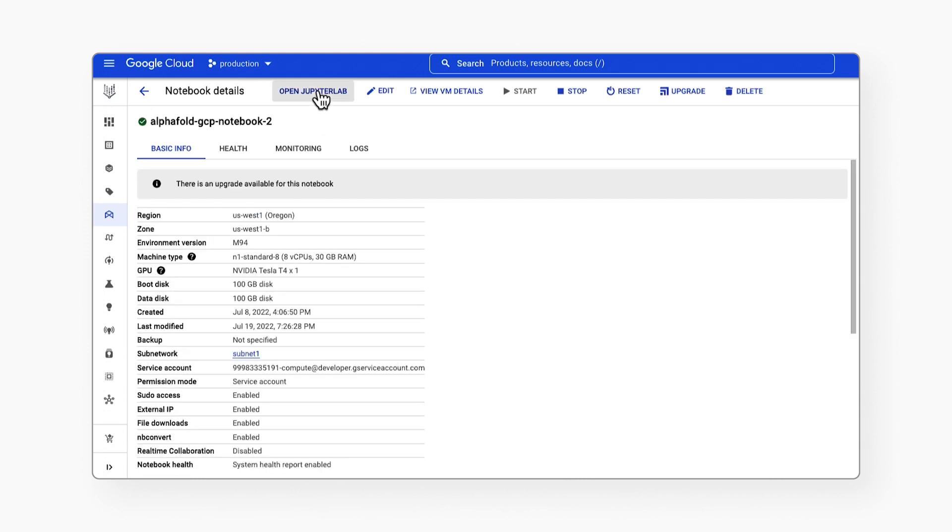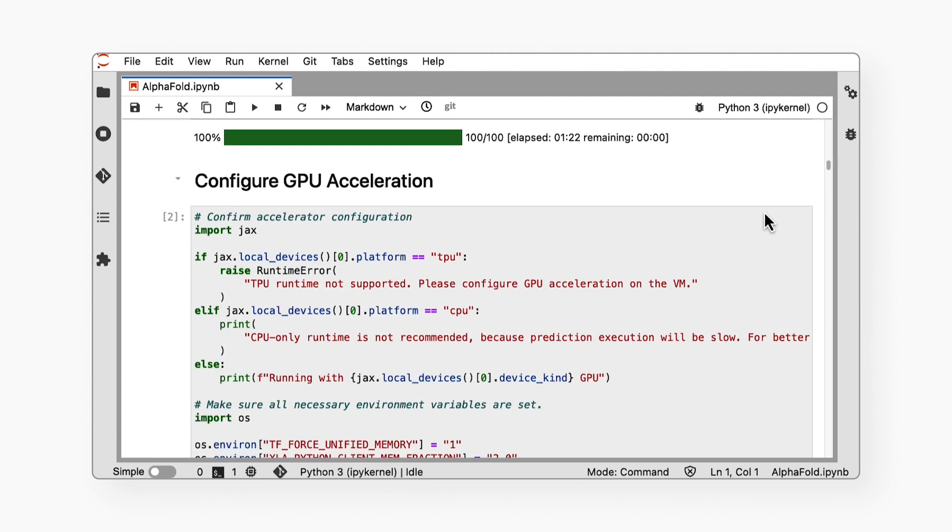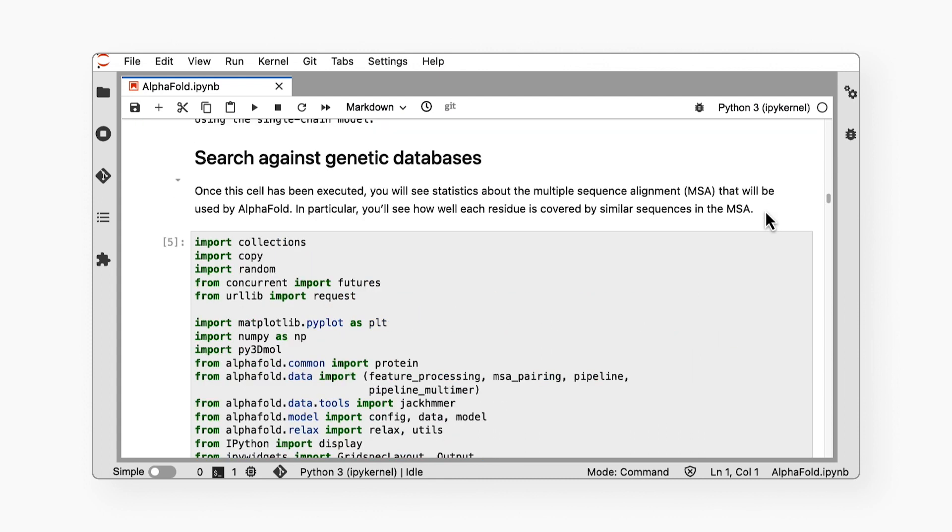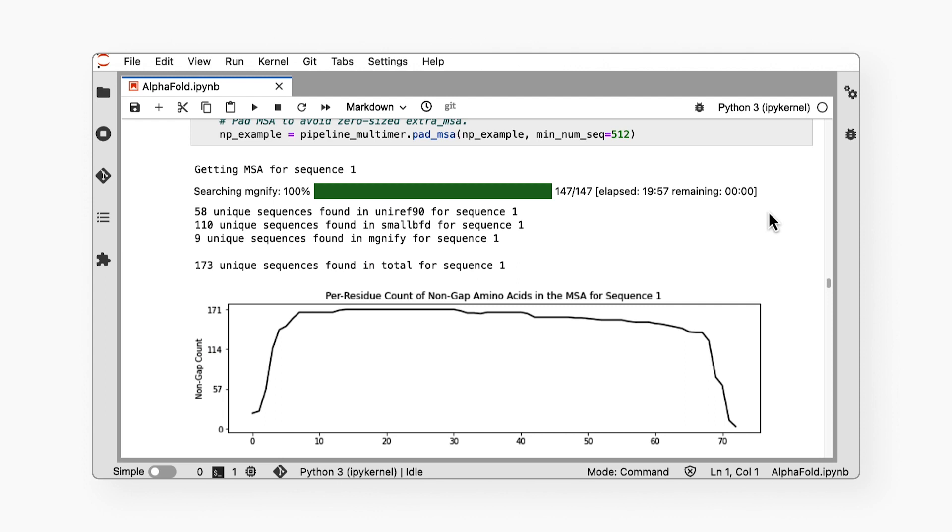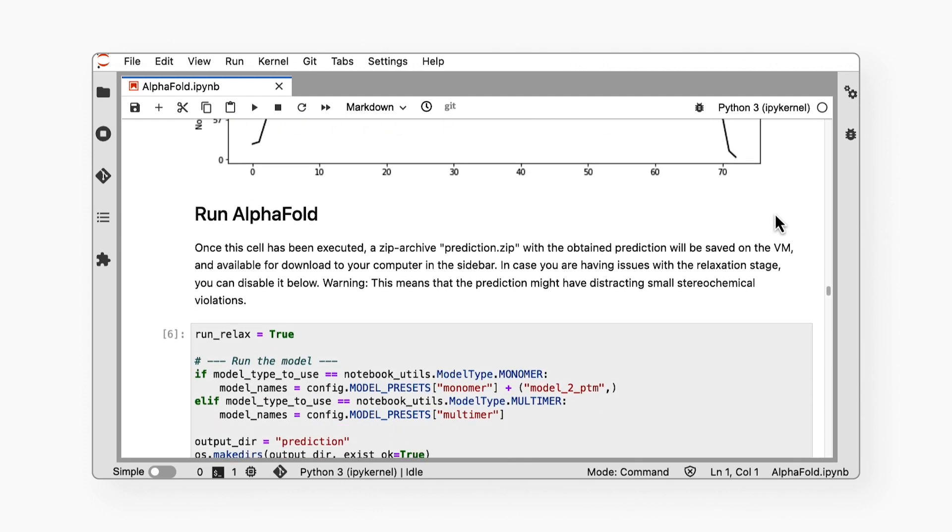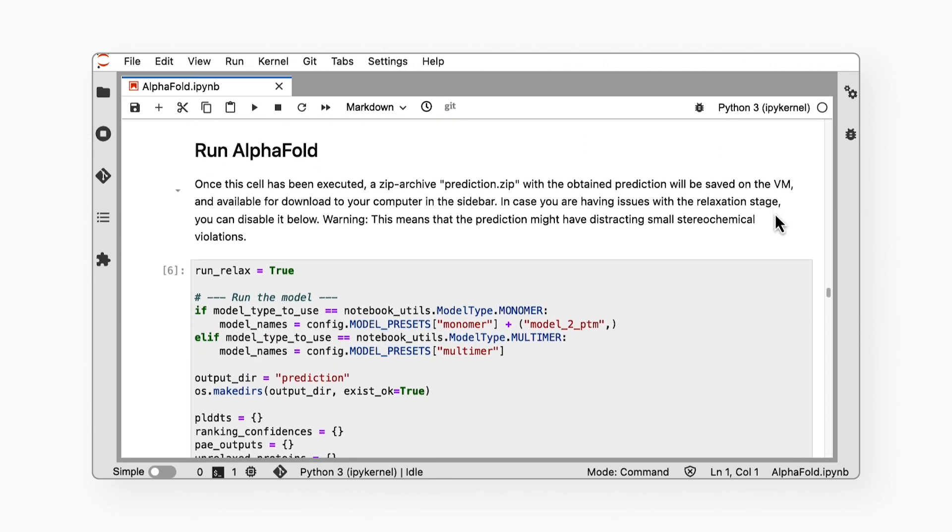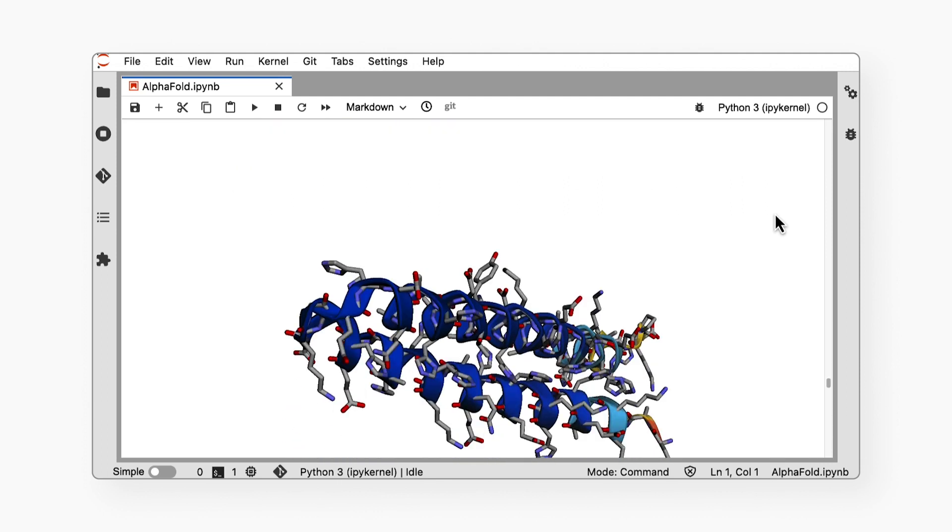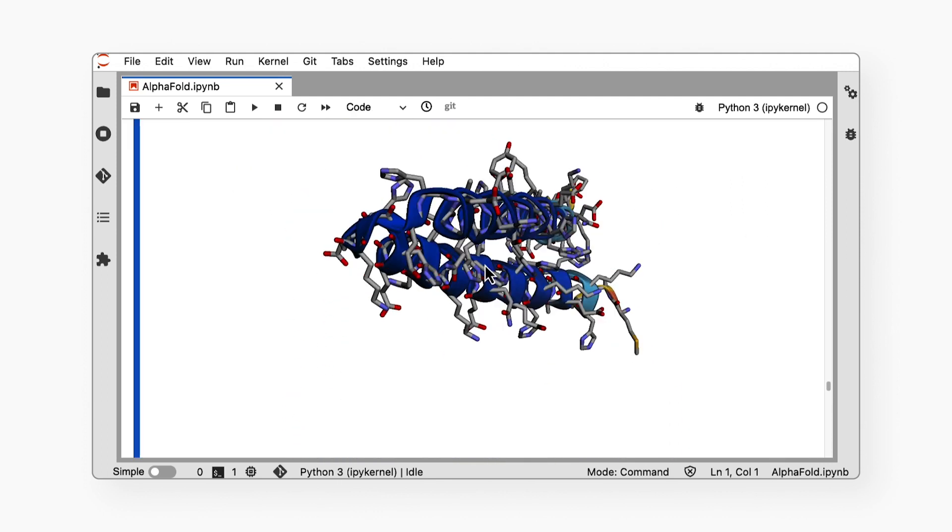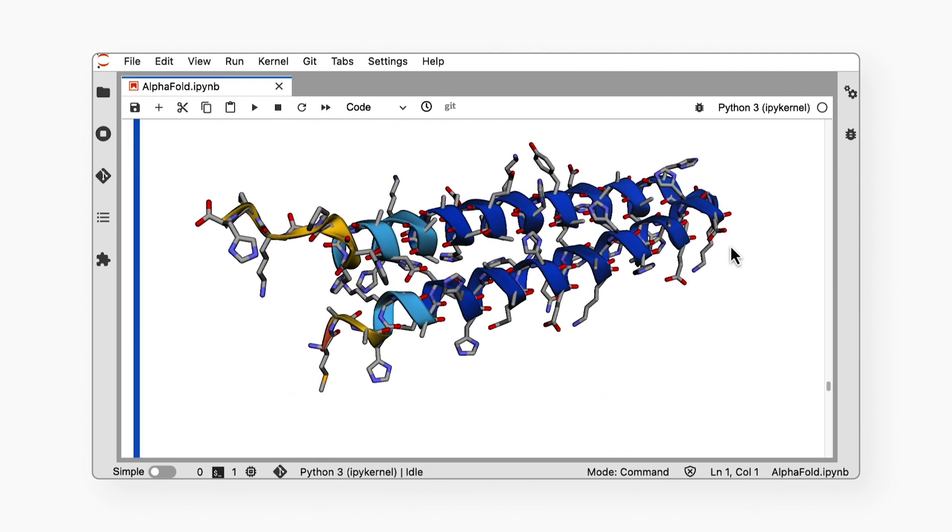You'll be able to download the AlphaFold data, configure GPU acceleration, search against genetic databases, and use the pre-processed results as inputs to the AlphaFold model locally. In a little over an hour, you can harness the power of AlphaFold to generate 3D protein structures from amino acid sequences.